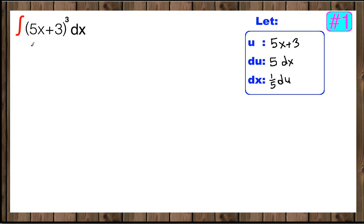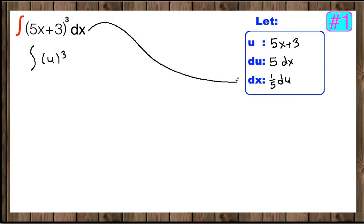Now let's write in terms of u. 5x plus 3 is u, and instead of dx we are going to write 1/5 du. We can pull 1/5 to the front and leave du there.